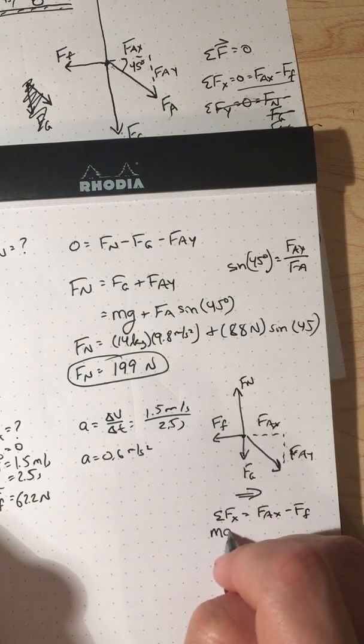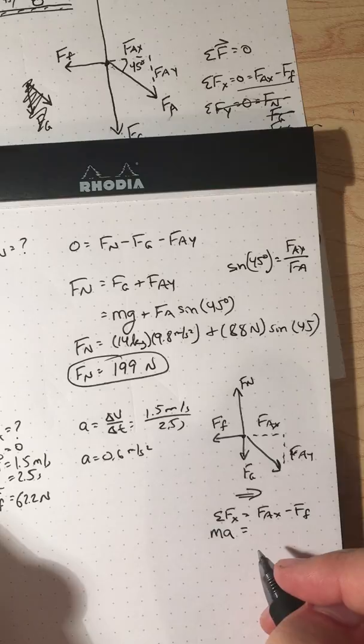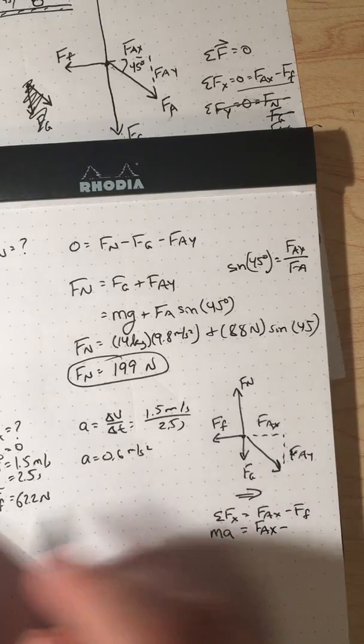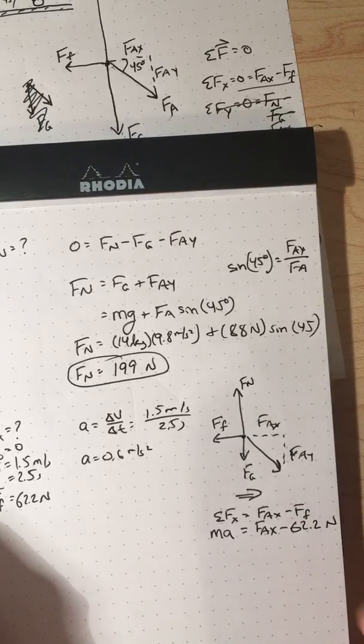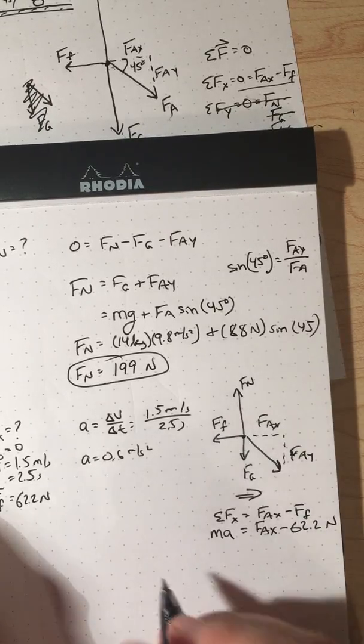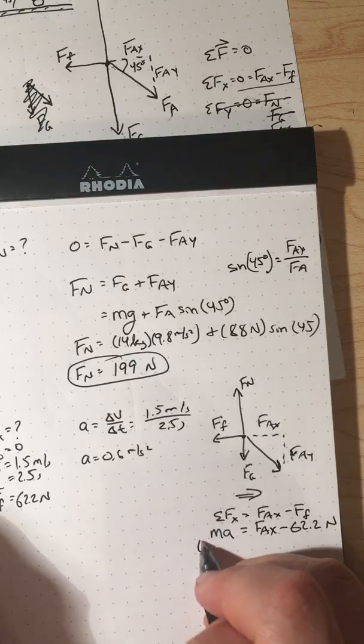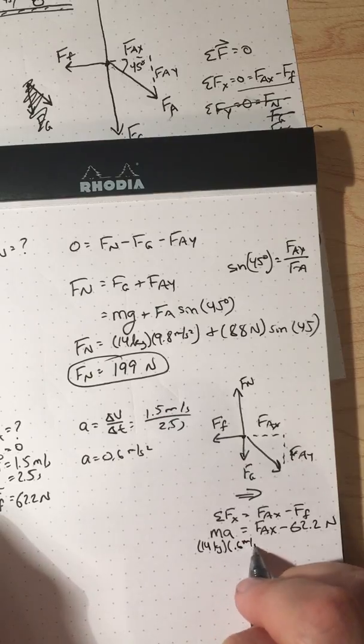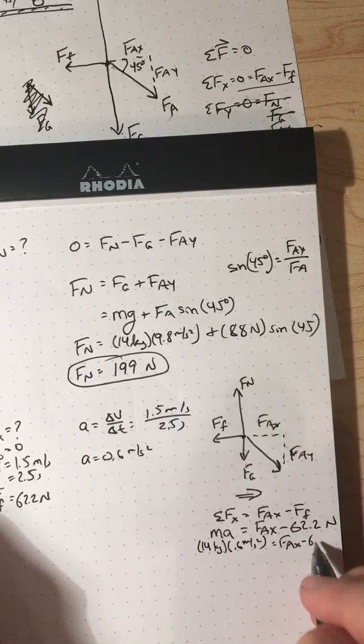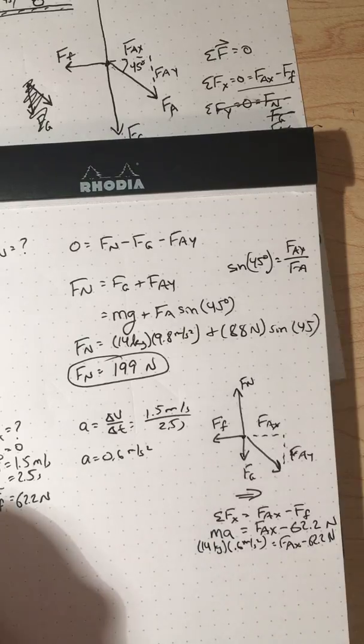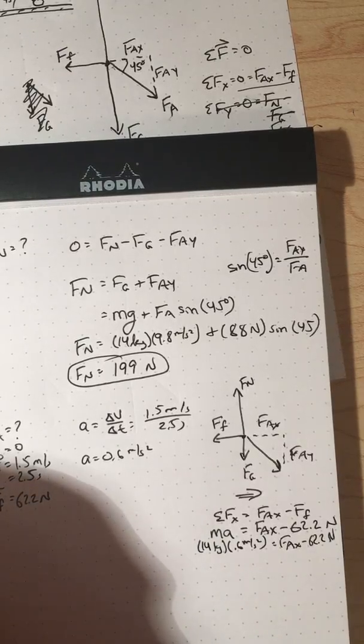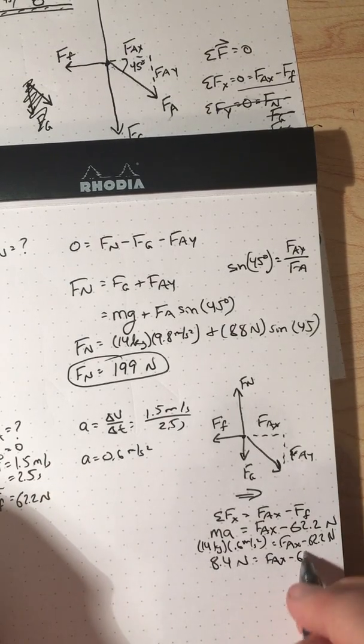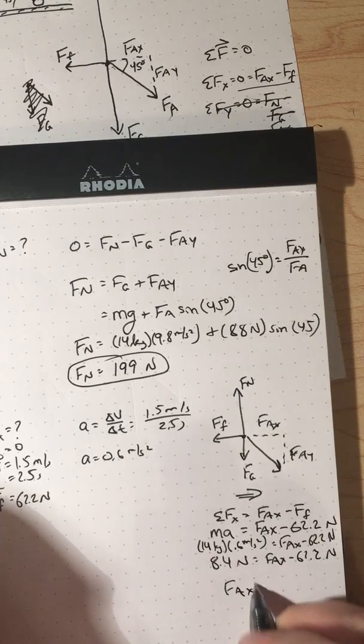So mass times the acceleration we just calculated should equal F_AX, which is the new one we want to find, minus the force of friction we got before, which was 62.2. So masses, I should have plugged that in, 14.6. I'm getting 8.4 newtons equals F_AX minus 62.2. So F_AX equals, why am I doing this on my calculator? Whatever.